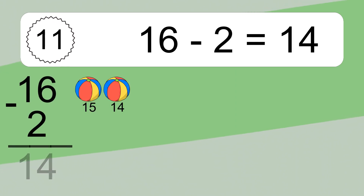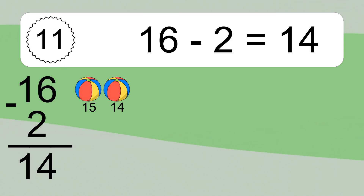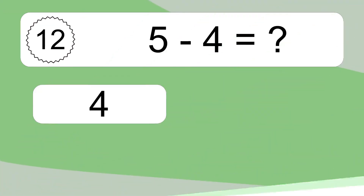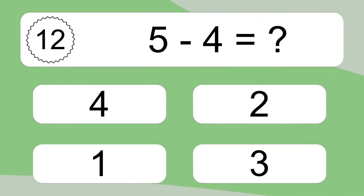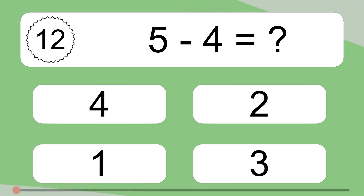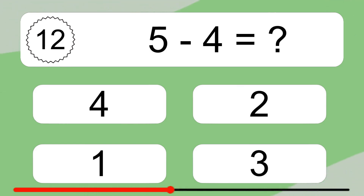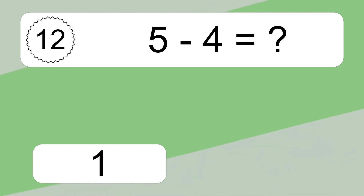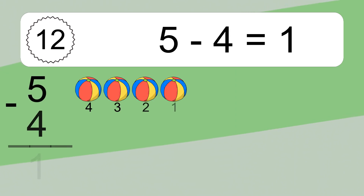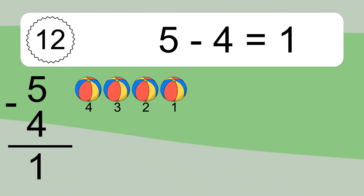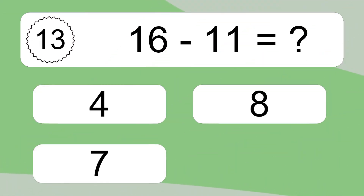16 minus 2 equals what? 16 minus 2 equals 14. Let's count it: 15, 14. 5 minus 4 equals what? 5 minus 4 equals 1. Let's count it: 4, 3, 2, 1.